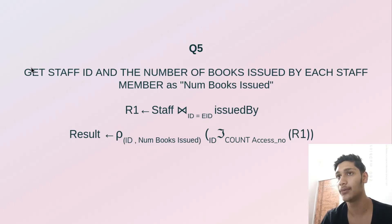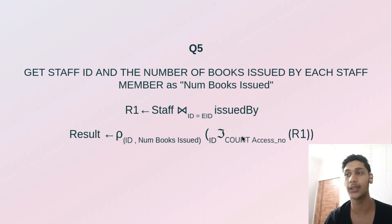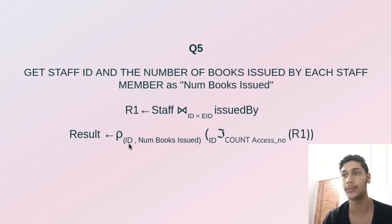In the fifth problem, get staff ID and number of books issued by each staff member as numbooks_issued. We perform a join between staff and issued_by where staff_id equals issued_by.eid, then group r1 by id and count all SS numbers under that id, naming the output columns as id and num_books_issued.